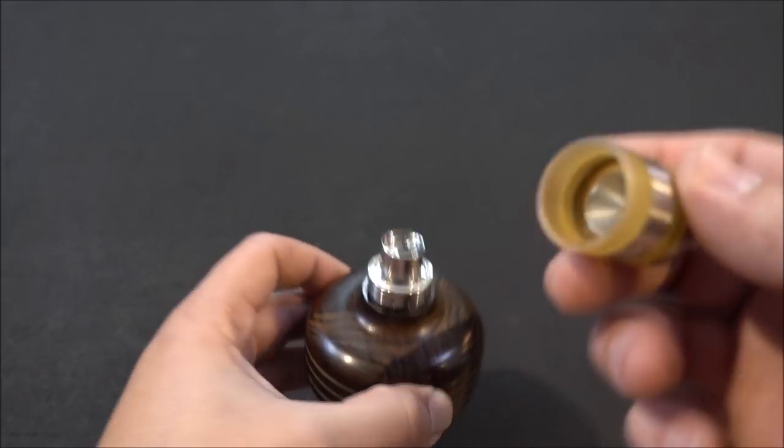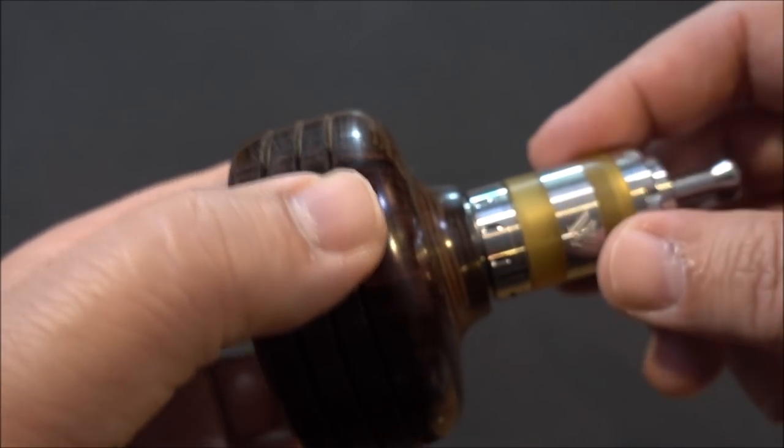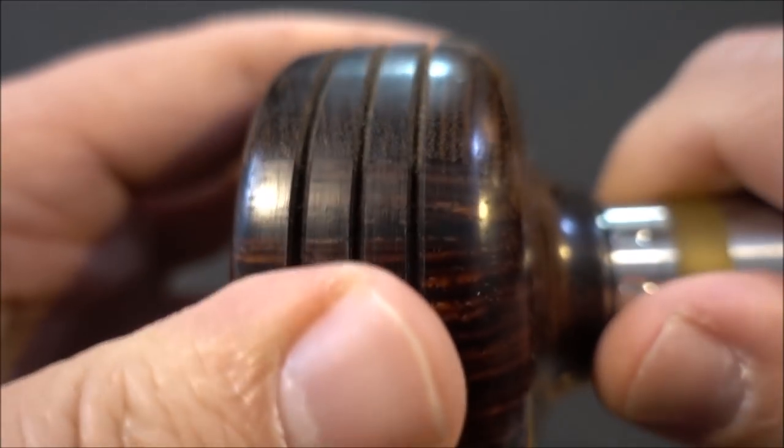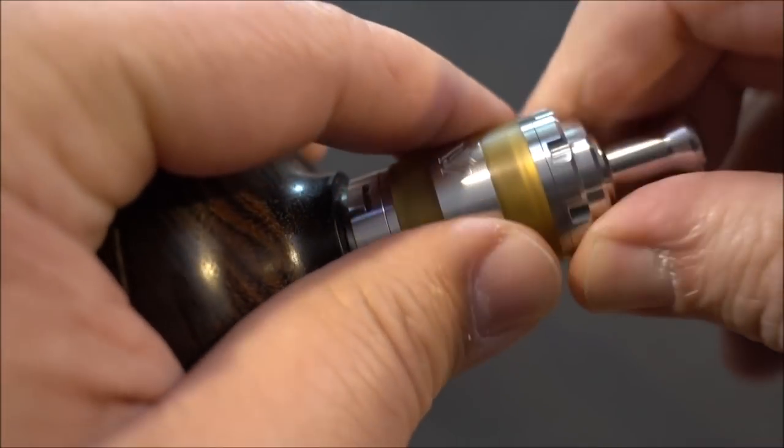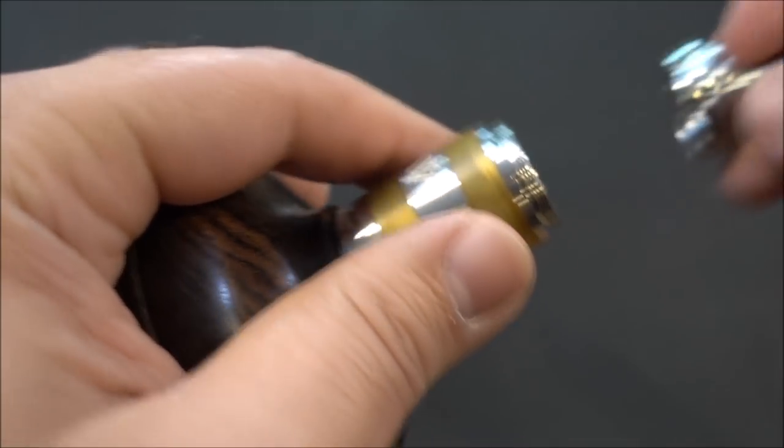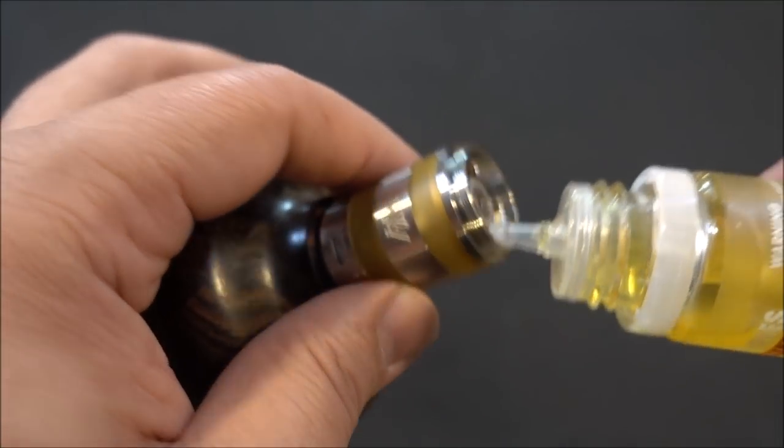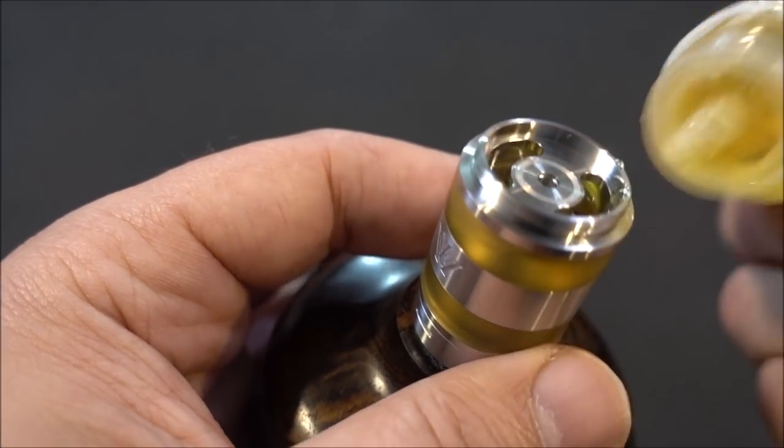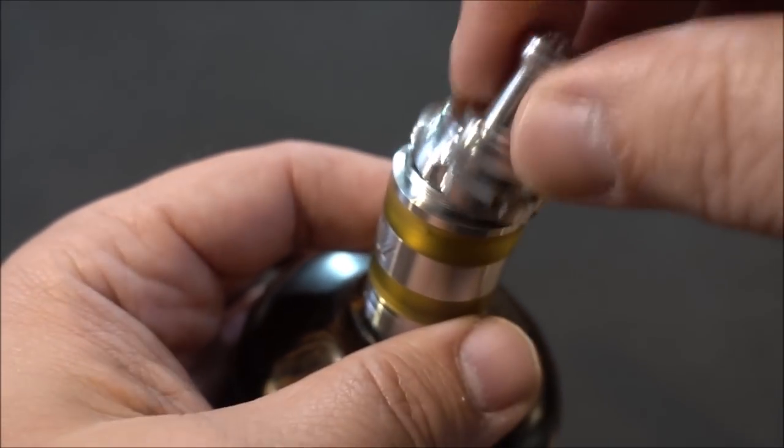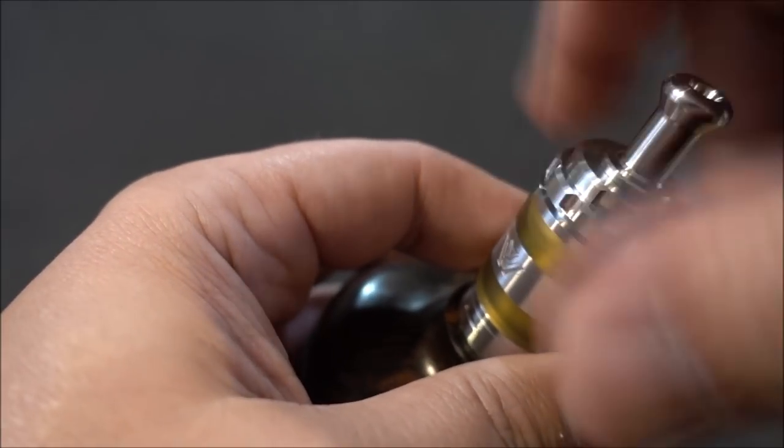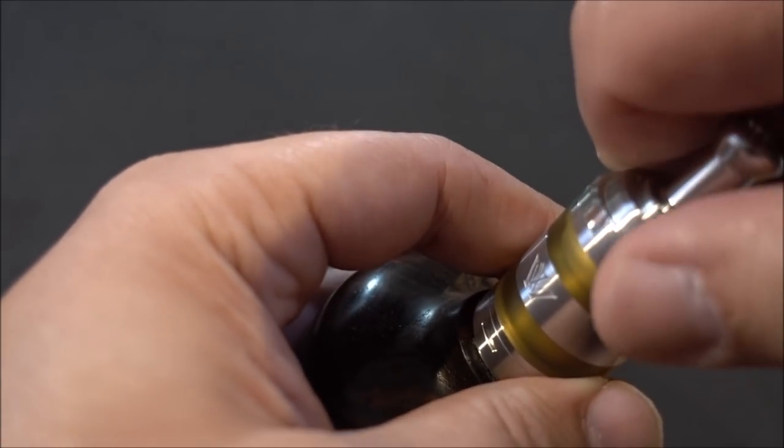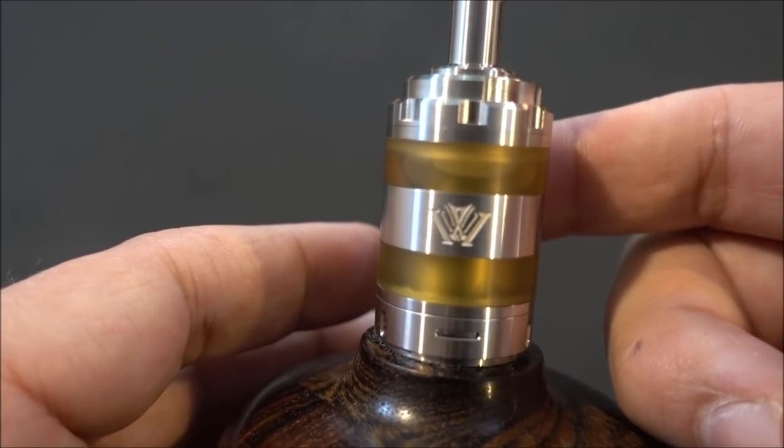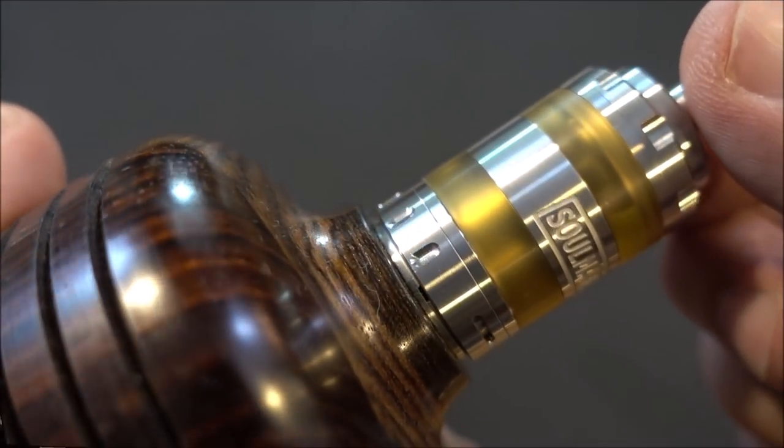Now we'll take this top piece, screw that in, make sure it's tight. There we go, feels good. Undo our top fill and fill. After we filled it up, throw our top cap back on, and we are ready to vape. So let's go back up on top, let's vape on it, and I'll give you guys my thoughts.